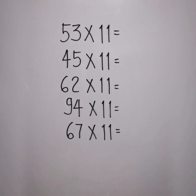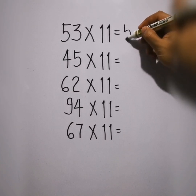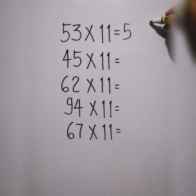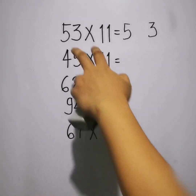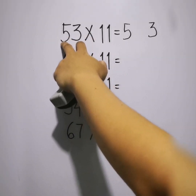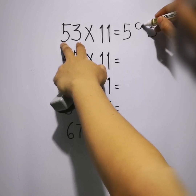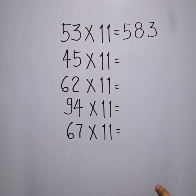So 53 times 11: the first step is you will copy the two-digit numbers and put a space in between. So we have 5 and 3. Then the next step, you will add 5 and 3. So that is 8. And just put it in the middle. The answer is 583. Easy, right?